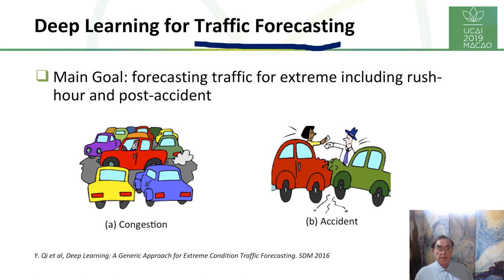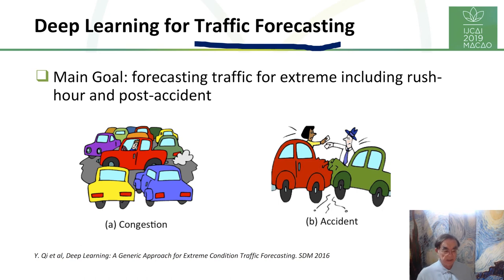Traffic forecasting requires including rush-hour effects, which are generic and recurring, as well as the statistical effects of accidents, which happen inevitably at different places and times with different levels of severity. Congestion is of course related, since accidents create congestion.